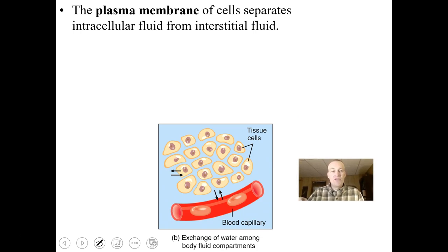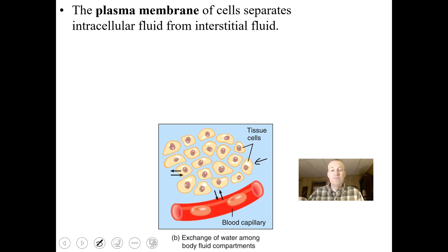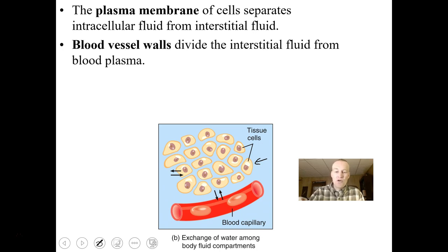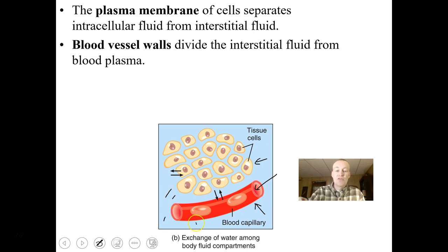Inside the body we have a lot of boundaries. The plasma membrane separates the intracellular fluid from the interstitial fluid, creating a boundary between the cell and interstitial fluid. Blood vessel walls, made of simple squamous epithelium, divide the interstitial fluid from the blood plasma. Inside the capillary we have blood plasma; the blue substance represents interstitial fluid and the yellow substance intracellular fluid.